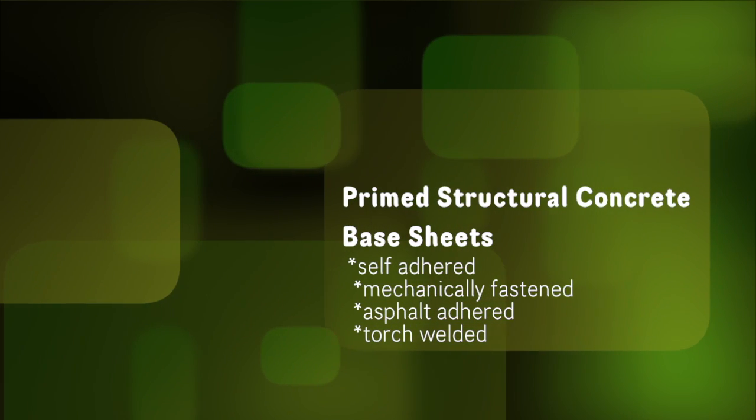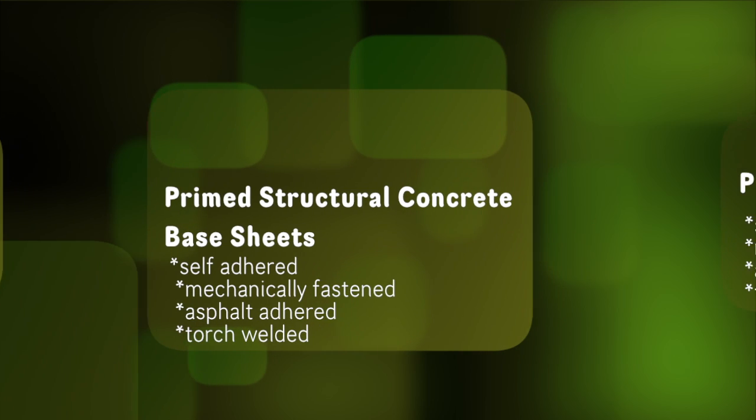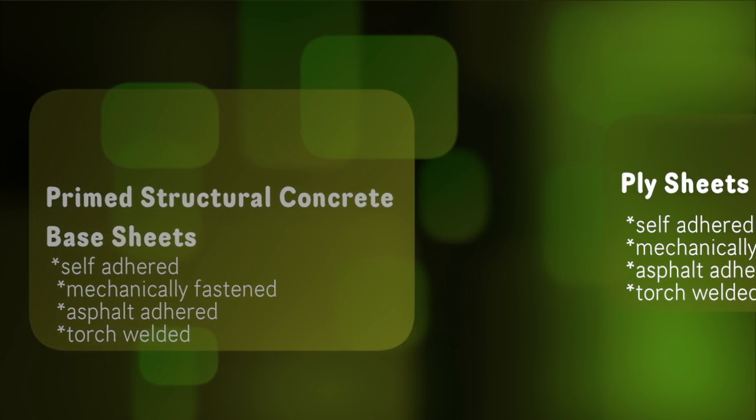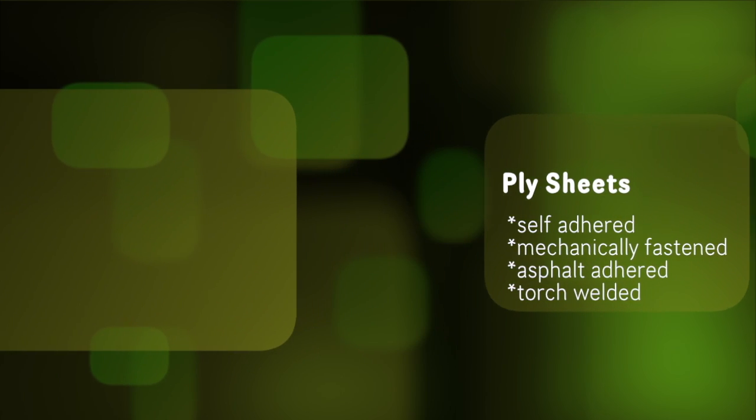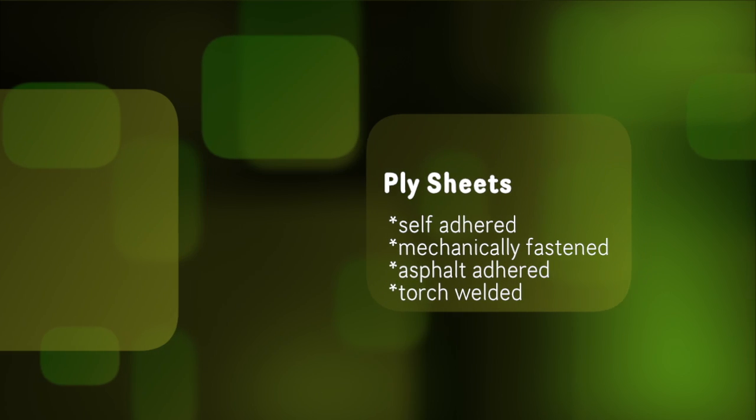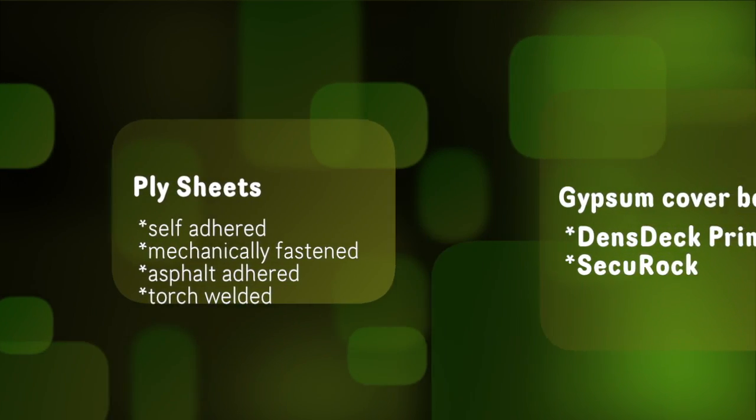Suitable substrates are prime structural concrete, base sheets that are self-adhered, mechanically fastened, asphalt-adhered, or torch-welded, ply sheets that are self-adhered, mechanically fastened, asphalt-adhered, or torch-welded, and gypsum cover boards such as Densdeck Prime or Secure Rock.